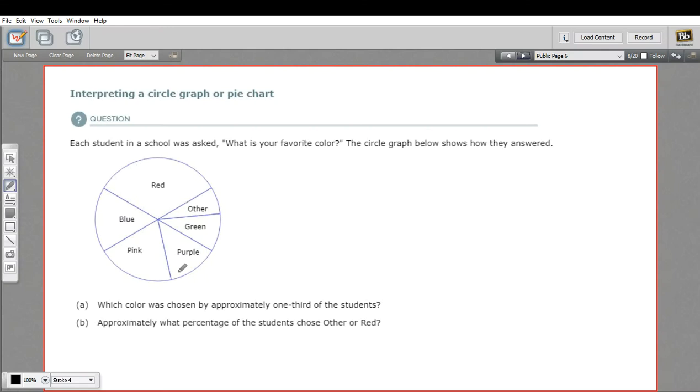In this problem, we have a circle graph, or it's sometimes called a pie chart or pie graph, and we need to answer some questions based on interpreting this graph. It says up here that each student in a school was asked, what's your favorite color? And this is what they came up with.